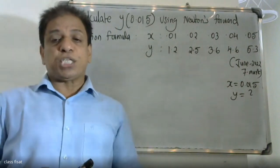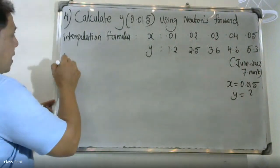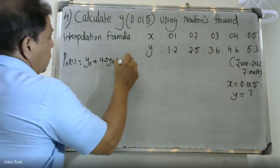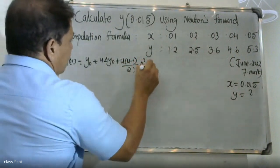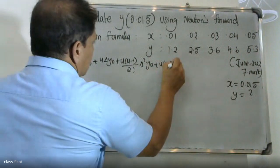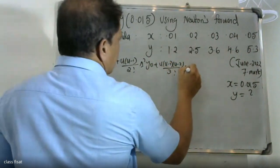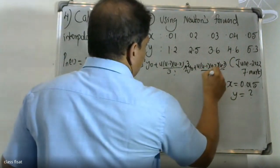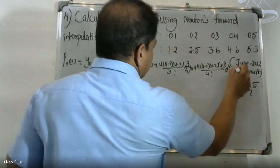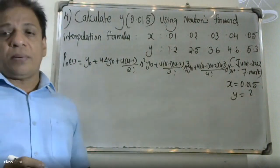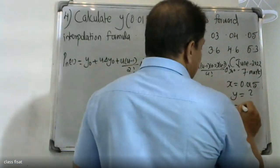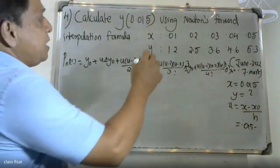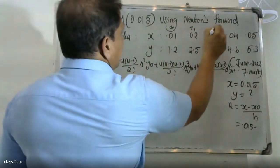Newton's forward interpolation formula: y(x) = y0 + u·Δy0 + u(u−1)/2! · Δ²y0 + u(u−1)(u−2)/3! · Δ³y0 + u(u−1)(u−2)(u−3)/4! · Δ⁴y0 + ... This is Newton's forward interpolation formula.